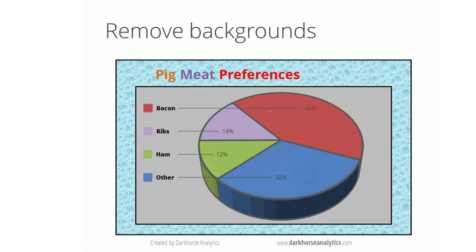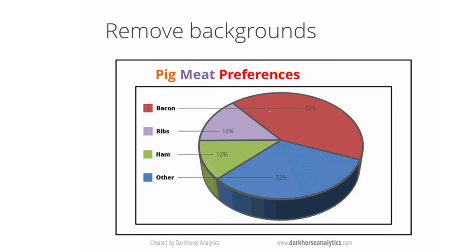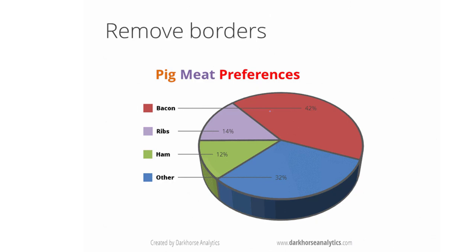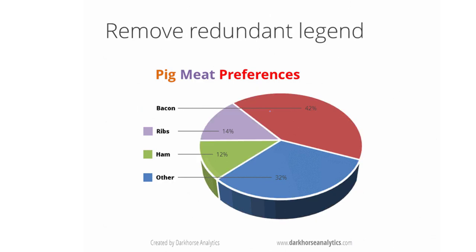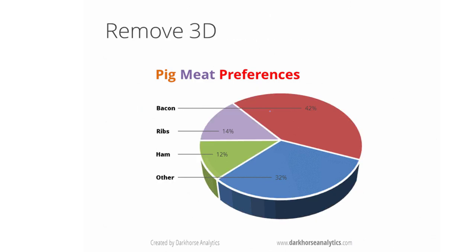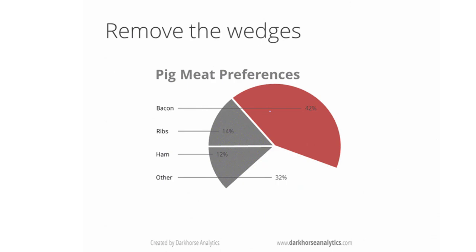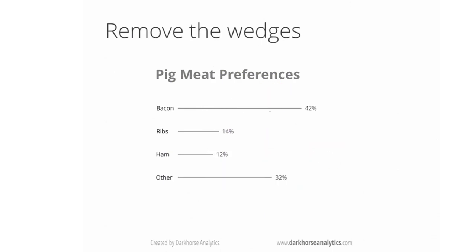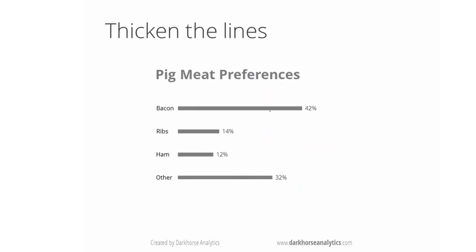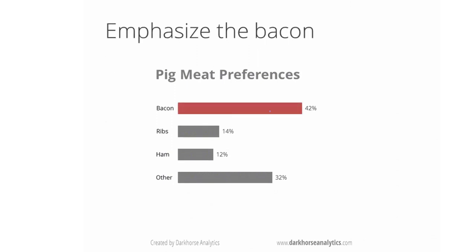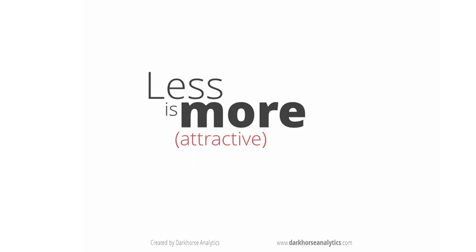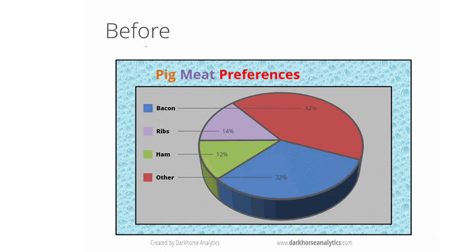How can we improve a pie chart? Remove the borders, remove the redundant legend, do not use 3D, don't use too many colors — just use a few colors to highlight. And finally, if we can, do not use pie chart. Less is more.